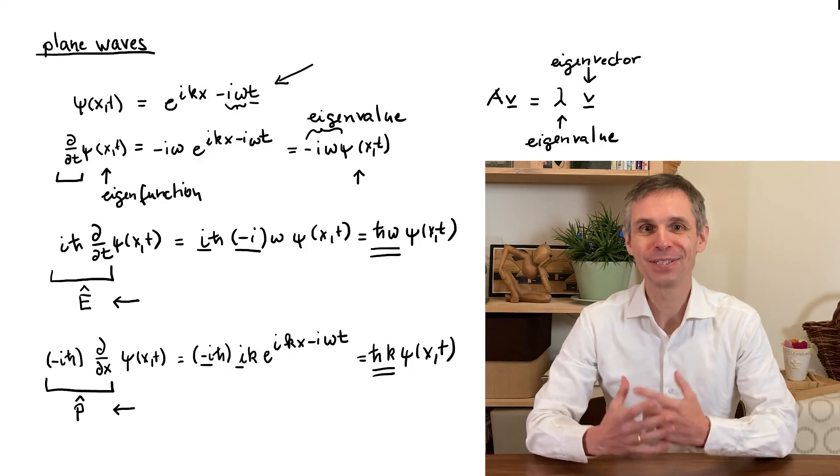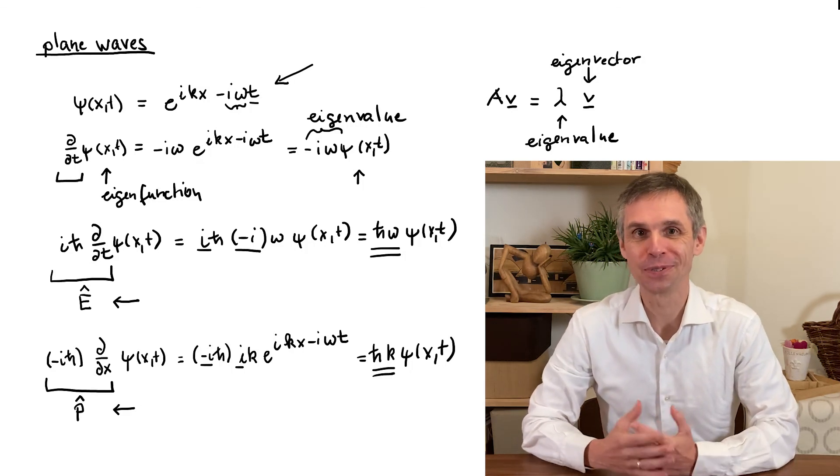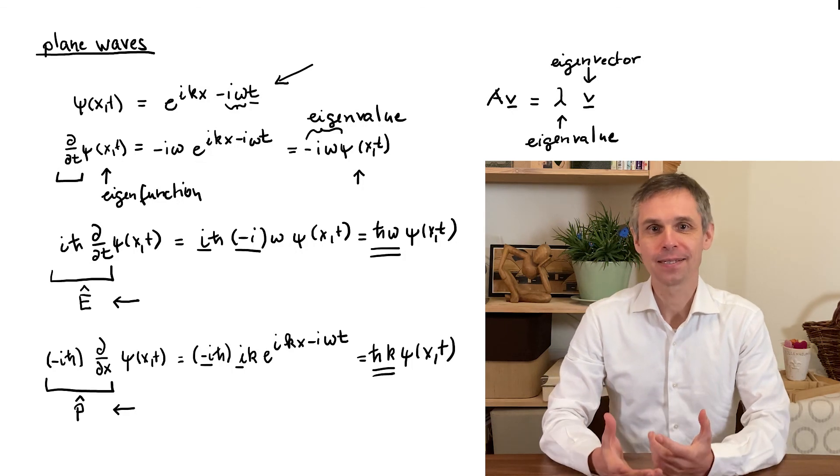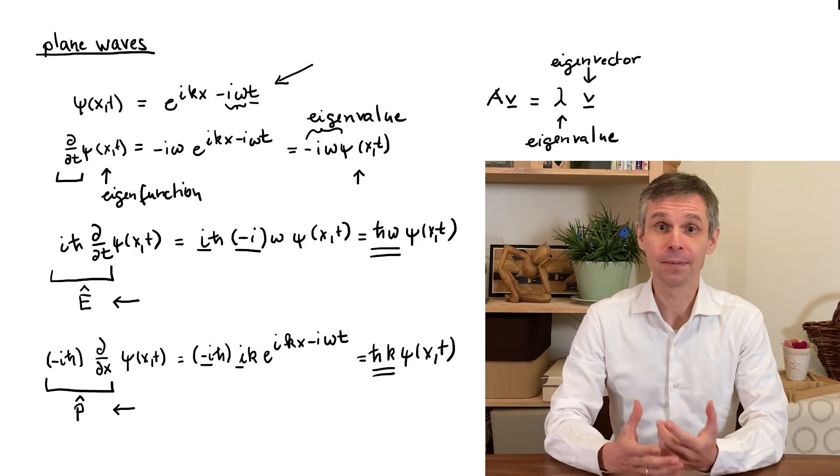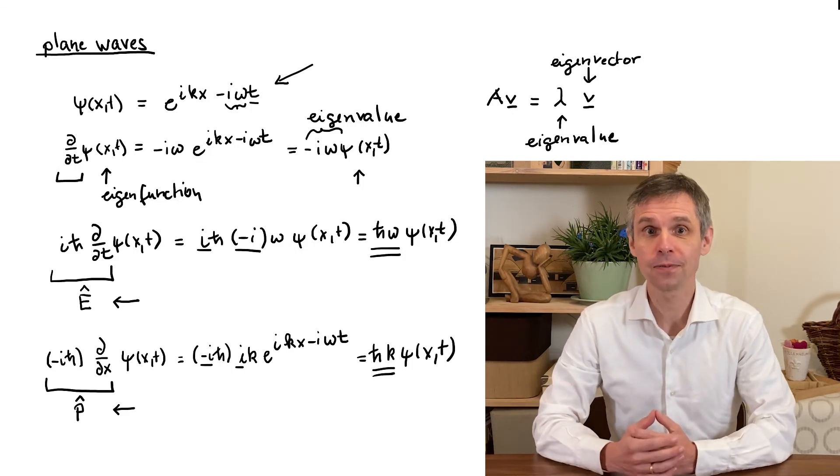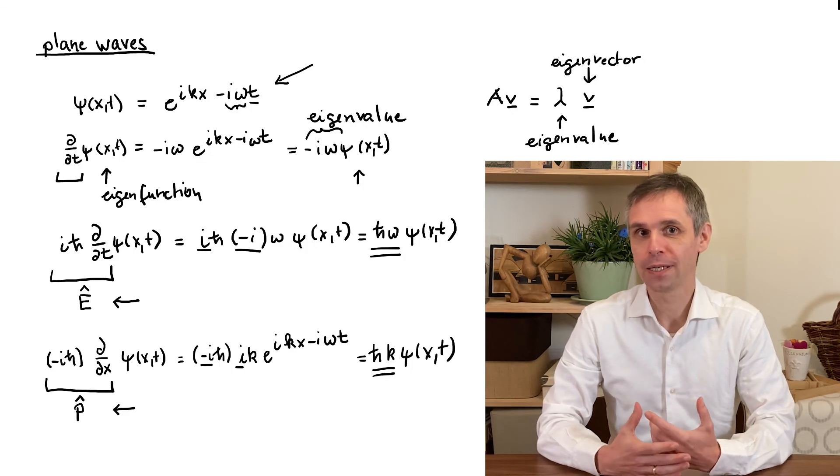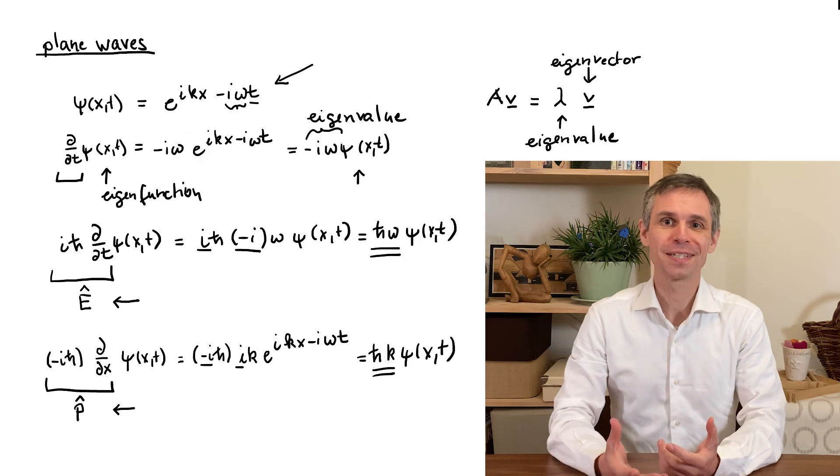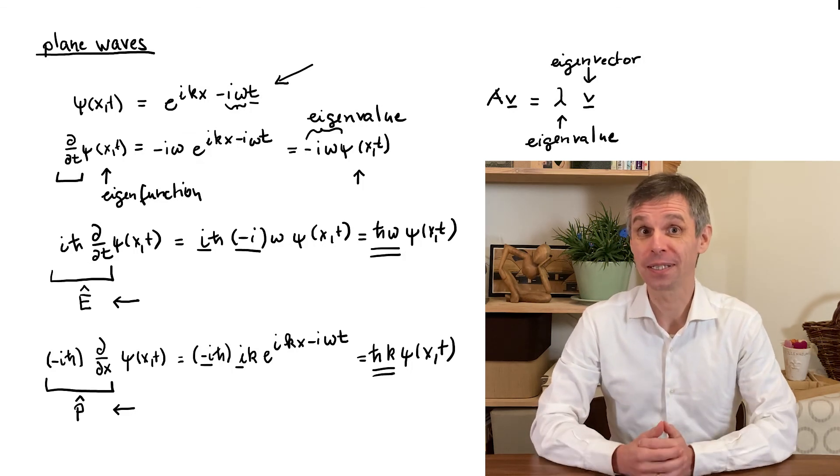But this wave function should still obey a certain suitable wave equation. Indeed what we are going to do next is to identify the operators E and P introduced here in a familiar wave equation that also applies to waves that are not monochromatic plane waves and use this insight to write down the Schrodinger equation.